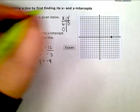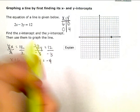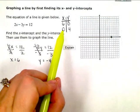My y-intercept is at (0, -4). When x is 0, y is -4. My line crosses the y-axis at negative 4.